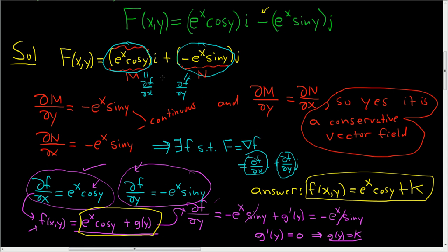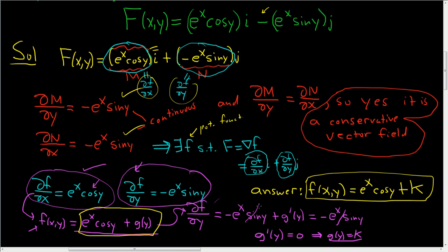To summarize: you check if it's conservative by verifying ∂M/∂y equals ∂N/∂x and that both are continuous. If so, a potential function f exists such that the vector field equals the gradient of f. You set M equal to ∂f/∂x and N equal to ∂f/∂y, pick one, integrate, then differentiate and use the other one. I hope this made sense.